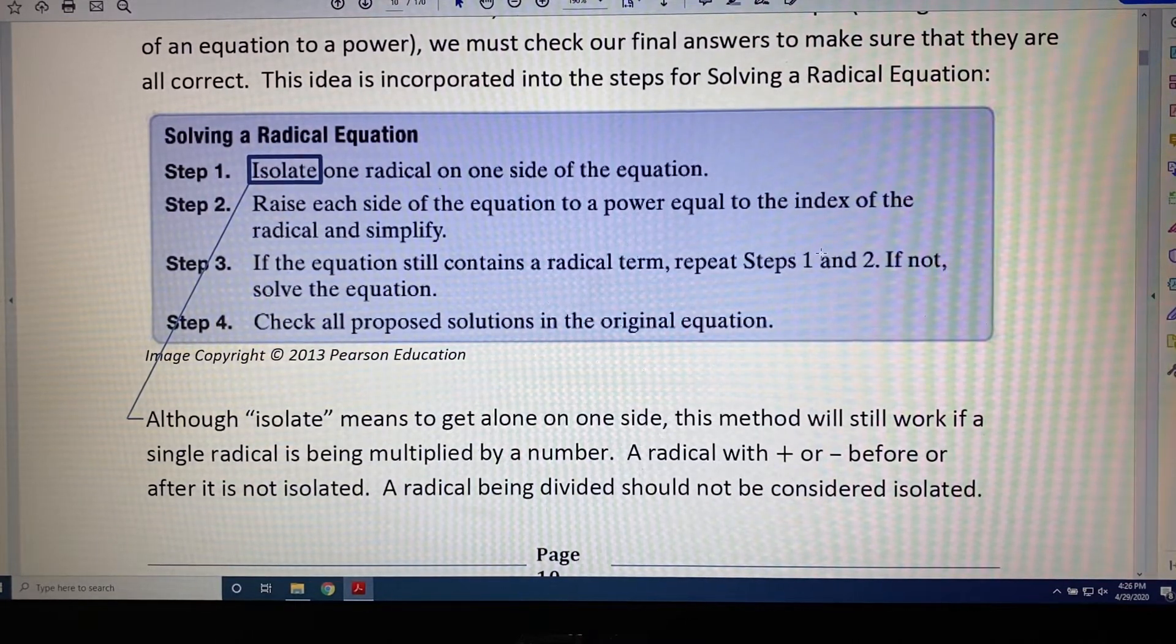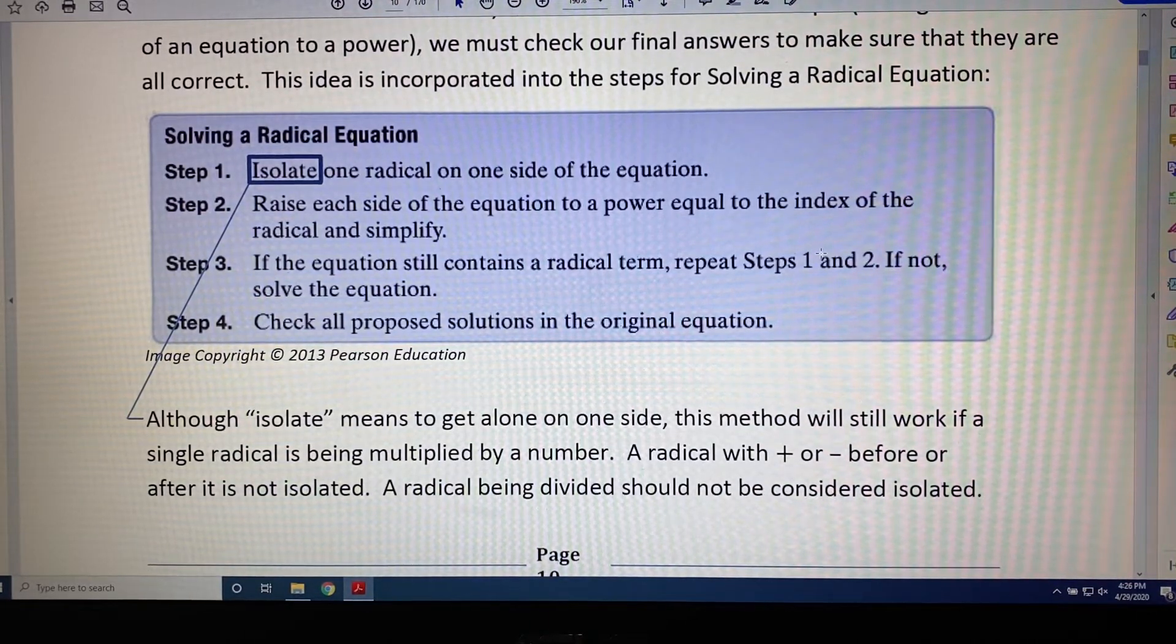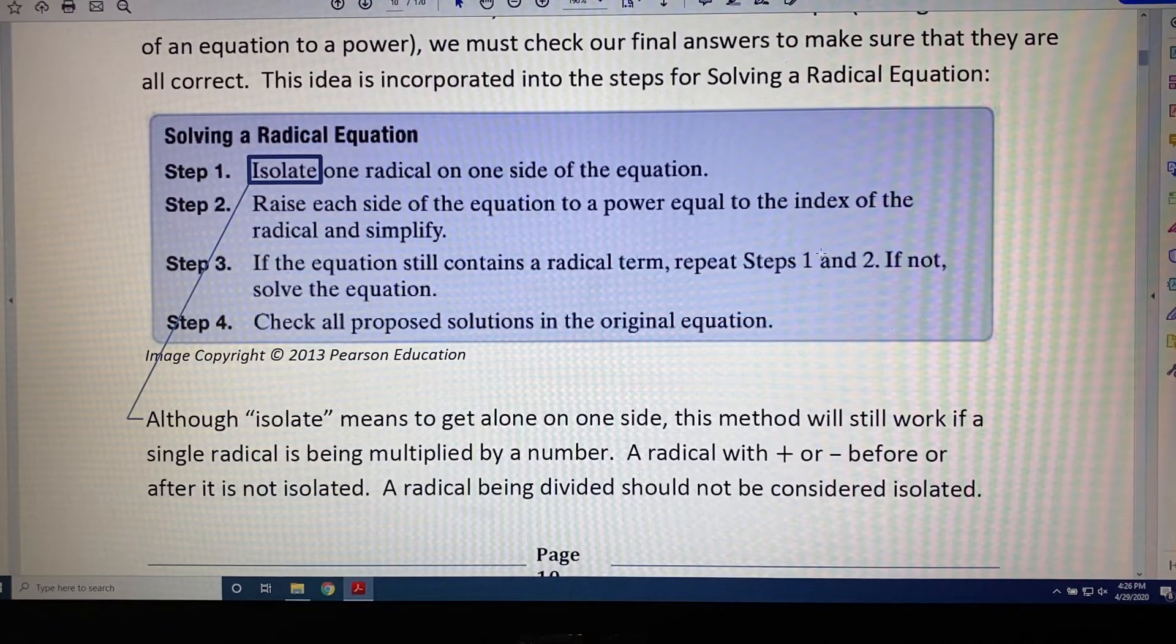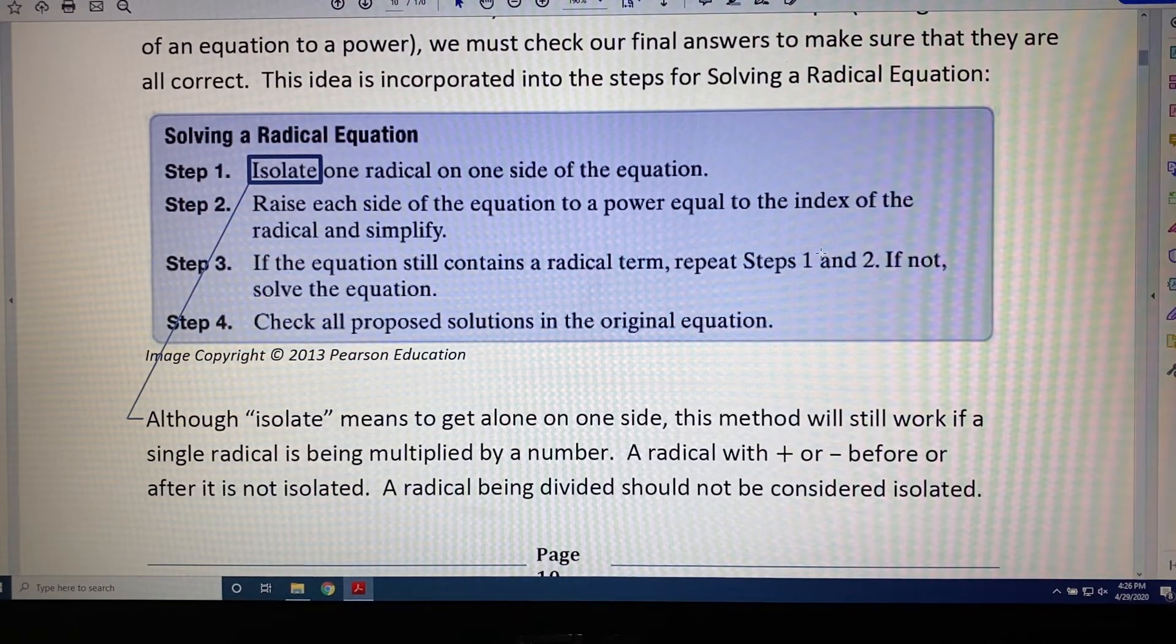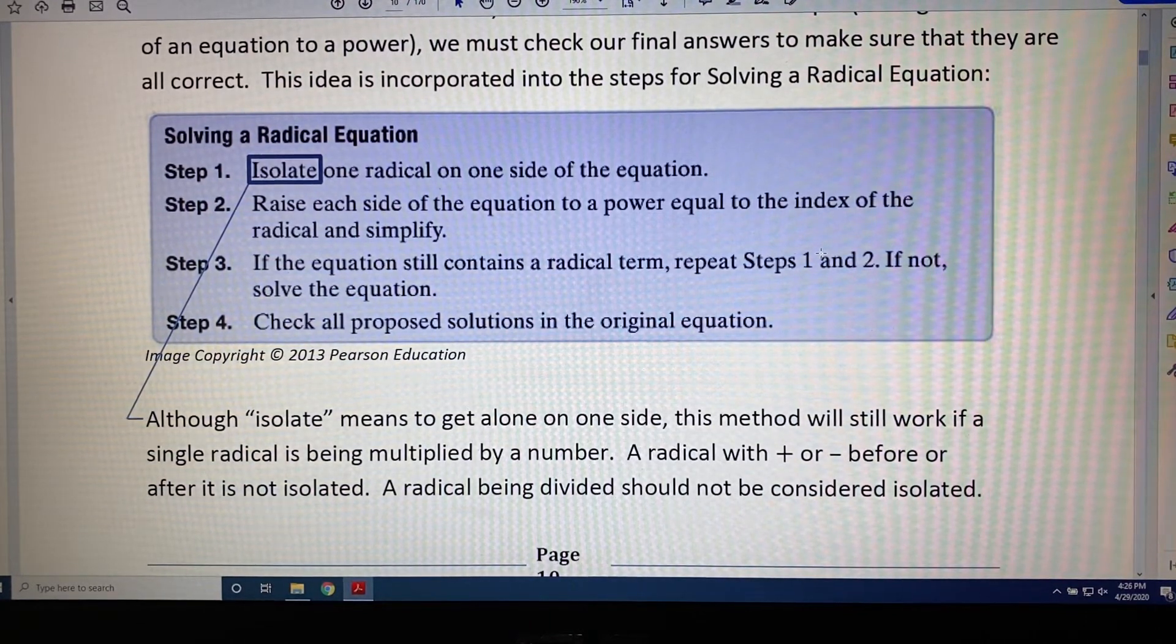It is worth discussing what the word isolate means in the context of these four steps. Although isolate means to get alone on one side, this four-step method will work even if a single radical is being multiplied by a number.